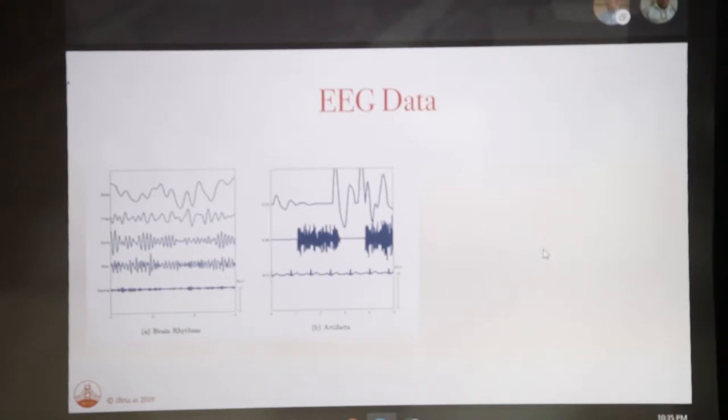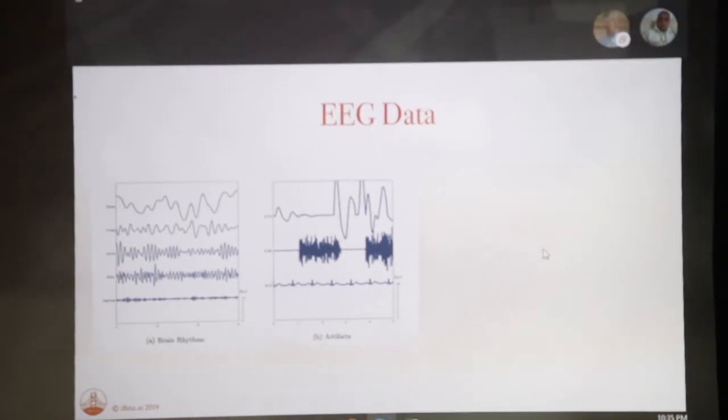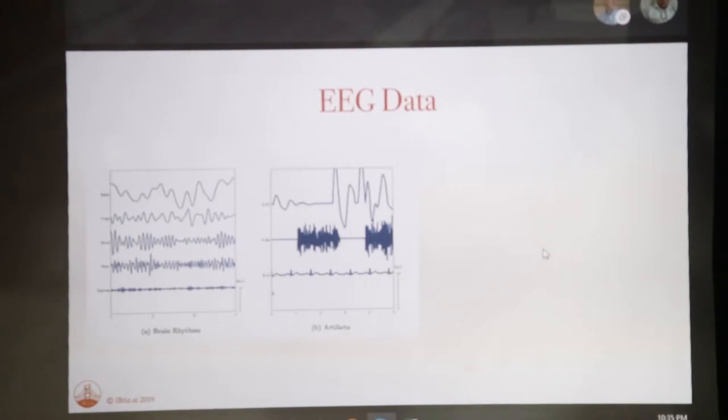So what you'd see out of one electrode, essentially when you break it down from EEG data, you have the delta wave, which is low frequency, theta, alpha, beta, and gamma. You can pull all of those out from one electrode.